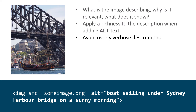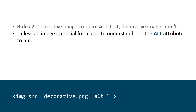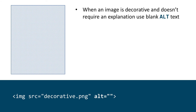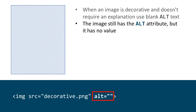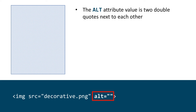Use enough of a description to convey what the image is showing. The second rule for adding images is: descriptive images require alt text, decorative images don't. Unless an image is crucial for a user to understand the content of the page, set the alt attribute to null. When an image is decorative and doesn't require an explanation, use blank alt text — the image still has the alt attribute but it has no value. So don't have alt text with the value of 'blank' or 'null' or a blank space. The alt attribute value is nothing except two double quotes next to each other.